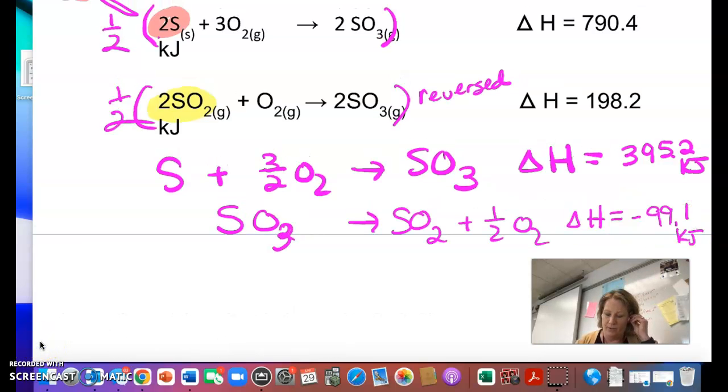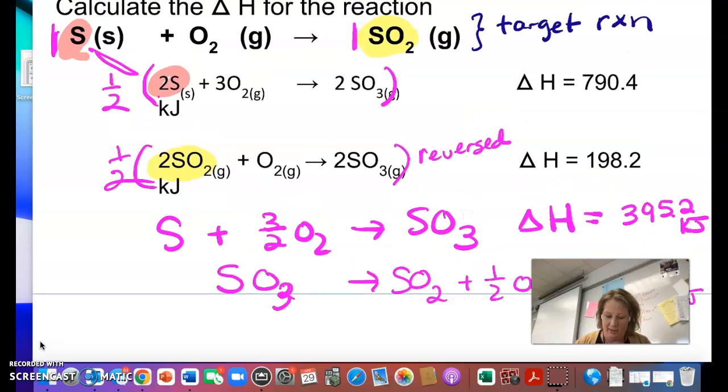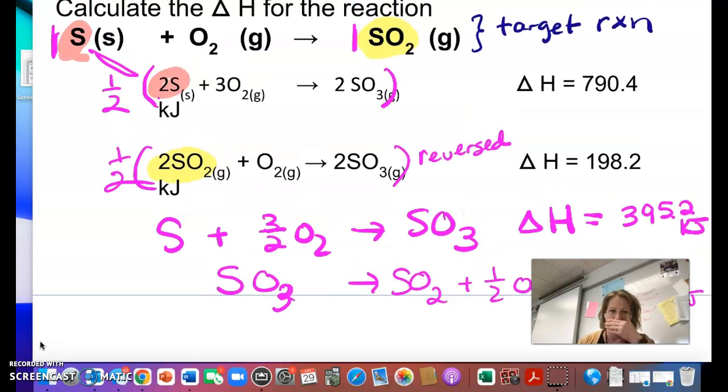Alright, so just to kind of recap because I kind of had to pause my video. But anyways, so first reaction, I had to multiply by one half so that my moles of sulfur were equal. And then I also then multiplied my delta H by one half. Second one, I had to reverse it and multiply it by one half. So there I changed the sign on my delta H and then I also multiplied it by one half.